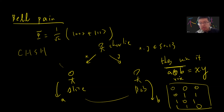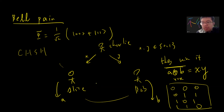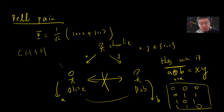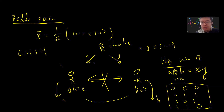They win if a XOR b equals x times y. The critical constraint is that they are not allowed to communicate. If they were allowed to communicate, Alice could just tell Bob what x was, and they could easily win the game.